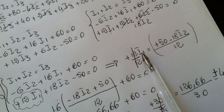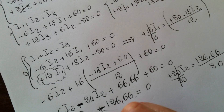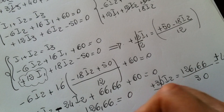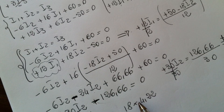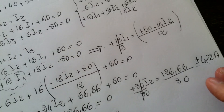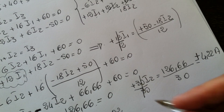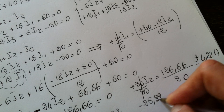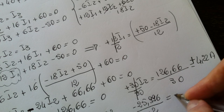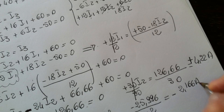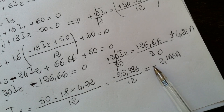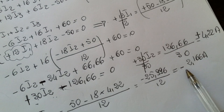We substitute I2 back into the previous equation. So I1 equals (50 minus 18 times 4.22) divided by 12. Doing the calculation, we get minus 25.996 divided by 12, which gives minus 2.16 amps. The negative sign means we got the direction wrong, so we have to change it — but there is no problem, we can just write it down. The module is correct: 2.16.